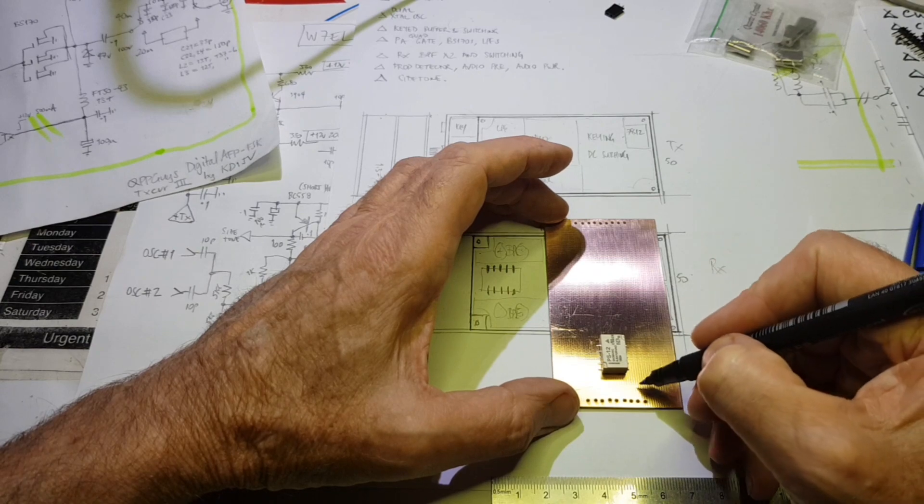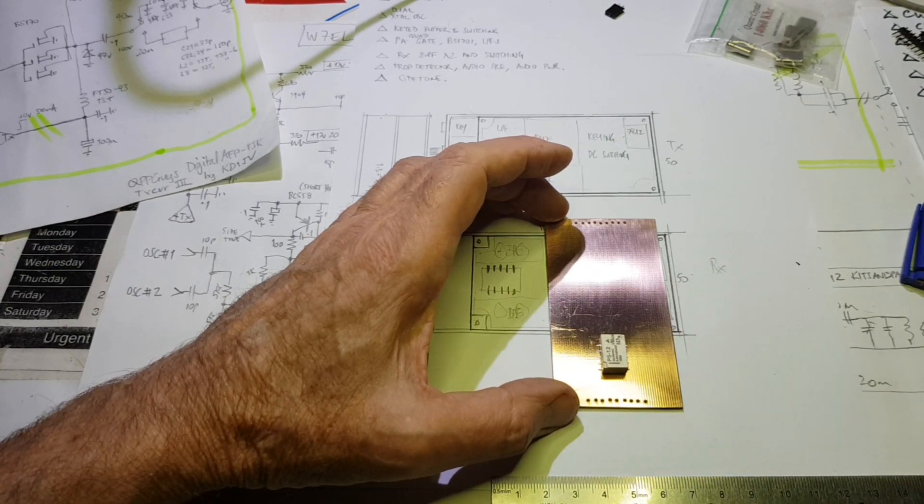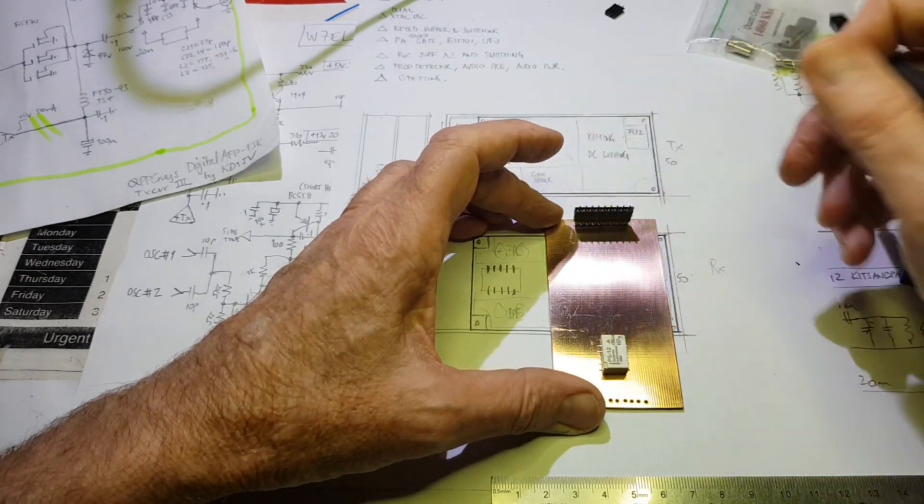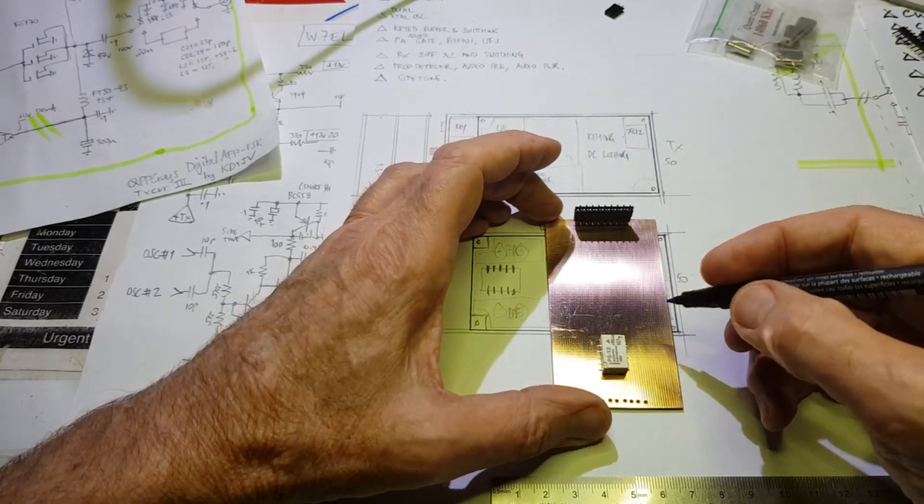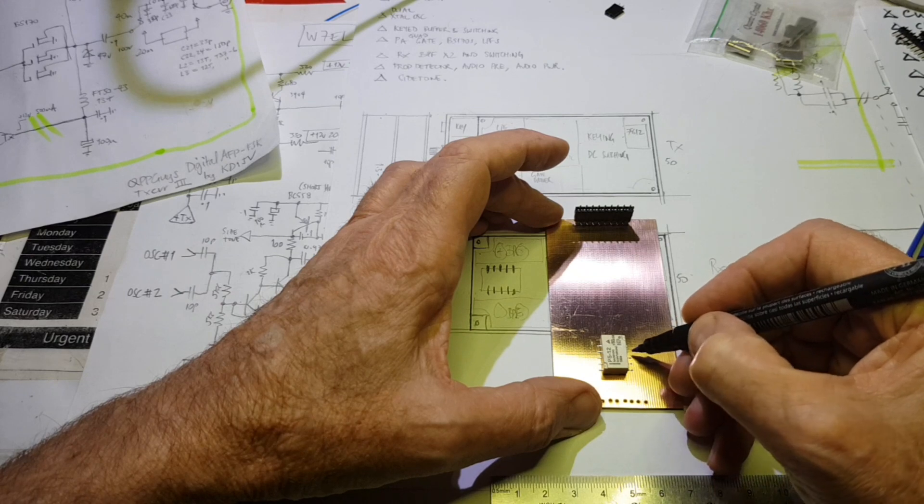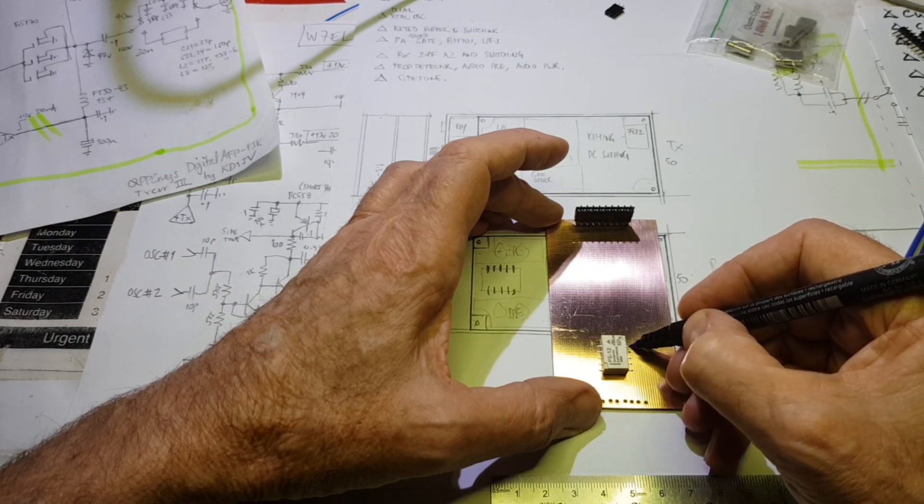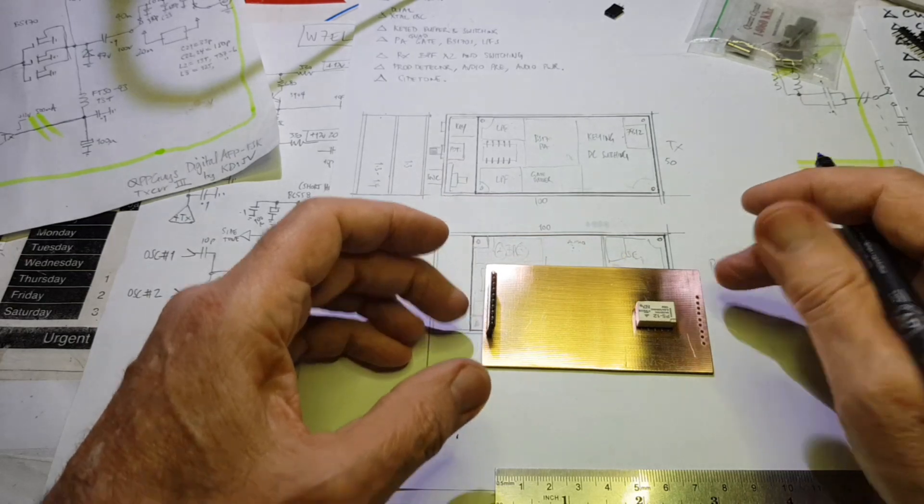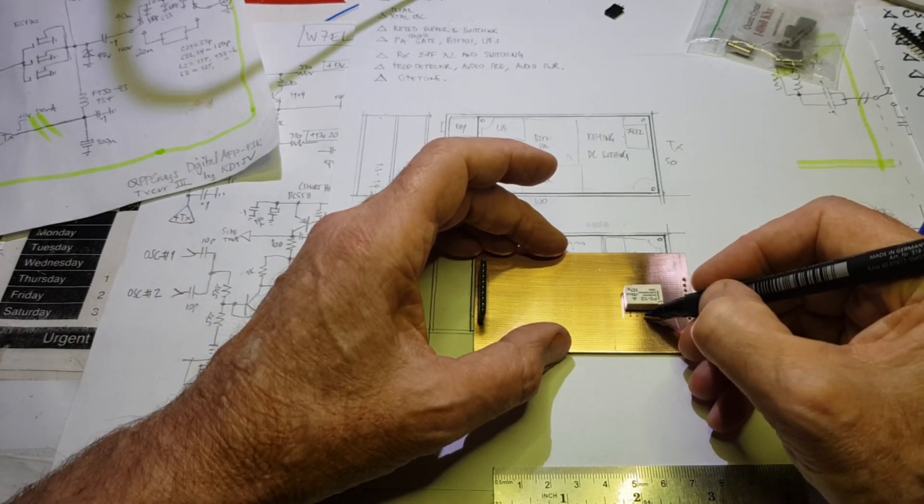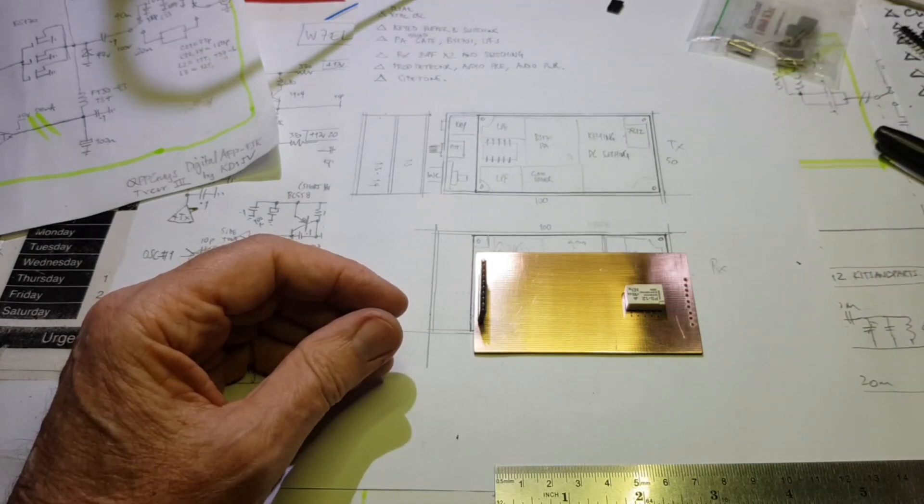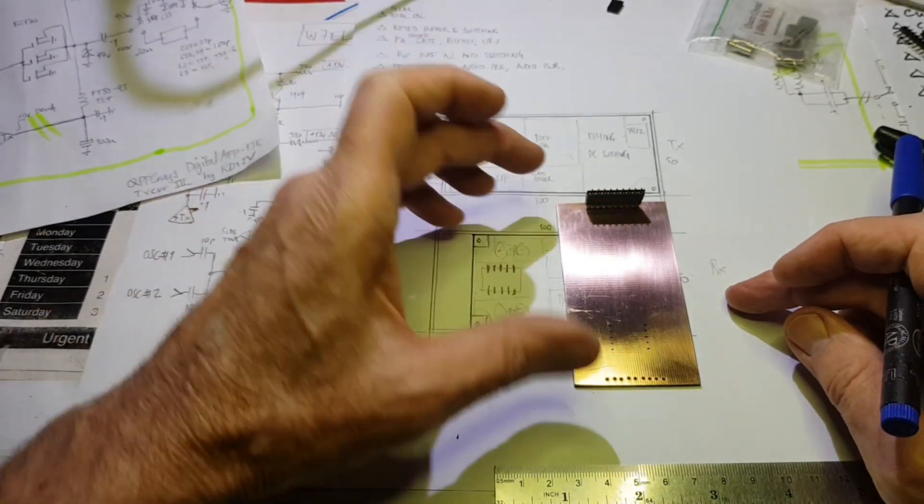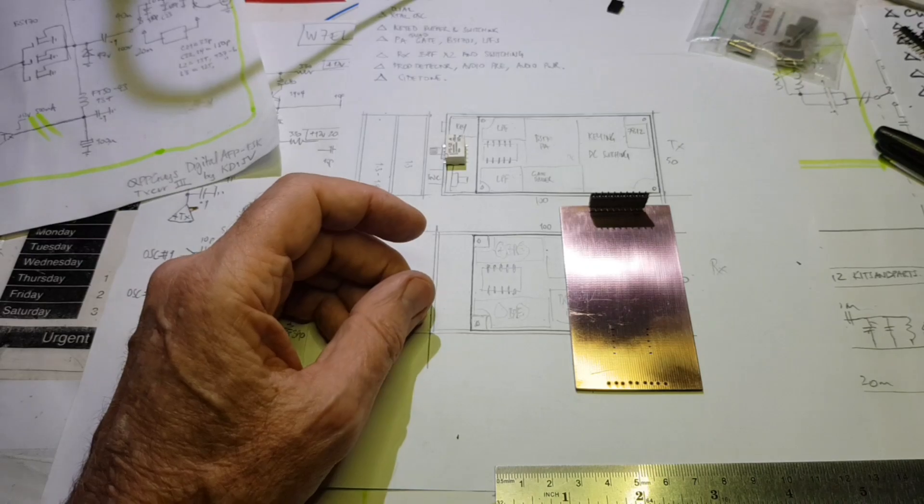Alright, so now that I've got the holes drilled for the 0.1-inch headers for this top board, now the fun starts. I'm going to hand-draw the pads that I'm going to need to implement each of these circuit blocks. This is a tedious part of the job, so I'm going to leave you and show you the finished product in just a minute.